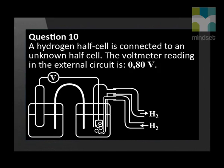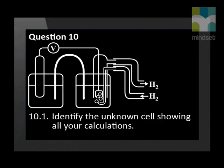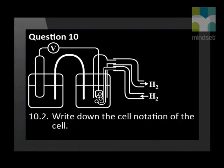The standard reduction potential table uses the hydrogen cell as reference. The next question uses this reference cell. A hydrogen half-cell is connected to an unknown half-cell. The voltmeter reading in the external circuit is 0.80 volts. Identify the unknown cell showing all your calculations. Write down the cell notation of the cell.